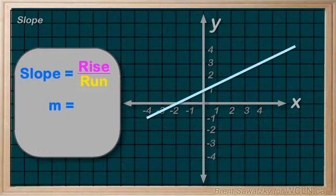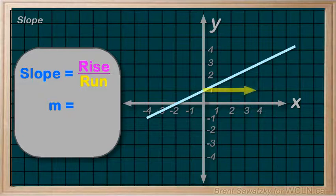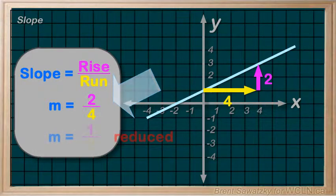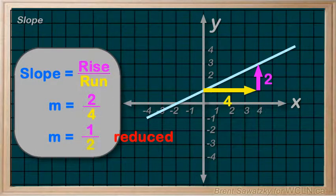For this one, a run of 4, and we'd have a rise of 2. So the slope would be rise over run, 1 over 2. We had half of the rise for the same run, so we have half of the slope.